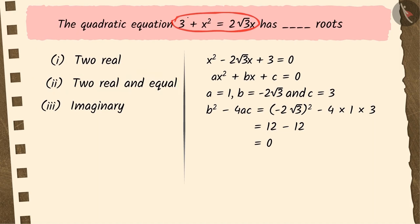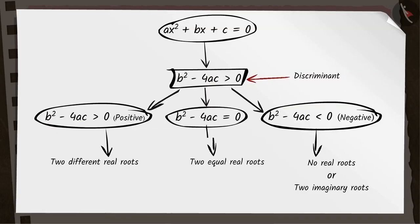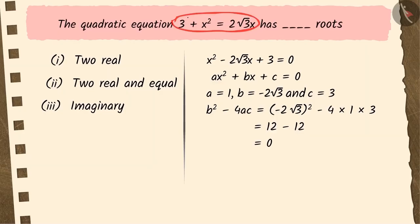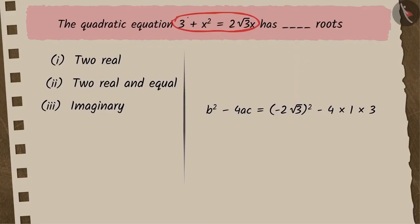Sushma solved the question correctly and found that the quadratic equation would have two real roots, but she forgot to mention whether those two real roots would be the same or different. Due to which, Sushma's answer, that is option 1, went wrong.